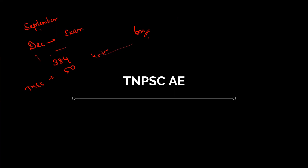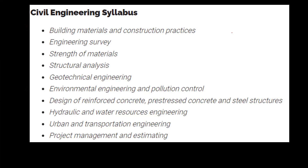You will prepare a full stretch of certification. Looking at the qualification, a diploma is not eligible — only BE is eligible. For students in this category, you will take Paper 1 and Paper 2. Paper 1 is civil engineering and Paper 2 is General Studies.